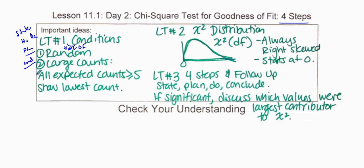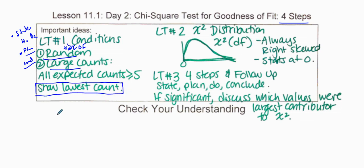These conditions are similar to previous ones, but here you don't need the 10% condition. What you need is: random sample, large counts, and all expected counts must be greater than or equal to 5. A fast way to check: find the lowest expected count — if it's at least 5, all the others will be too.